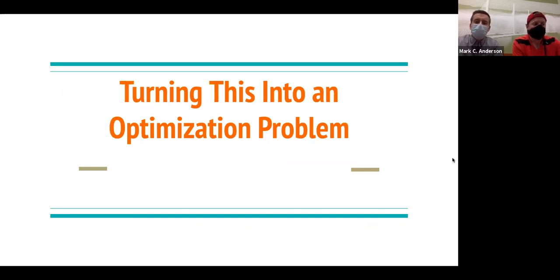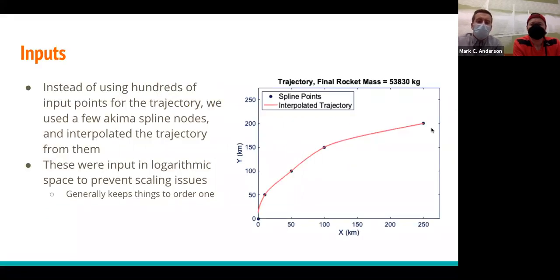With a physics-based simulation in place, we wanted to form optimizations on these trajectories to minimize fuel consumed. It's important to note that we only simulate the fuel, not the rocket structure, so our final result showing mass remaining must account for both the rocket structure mass and payload mass. Initially, we put every point in the trajectory as an optimization input, which gave us 270 design variables — very cumbersome, awkward, and slow.